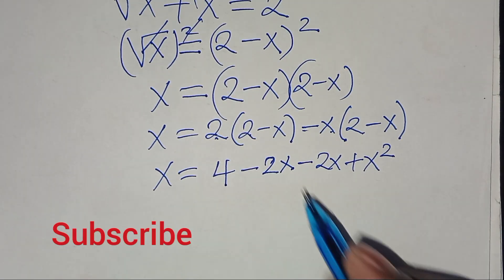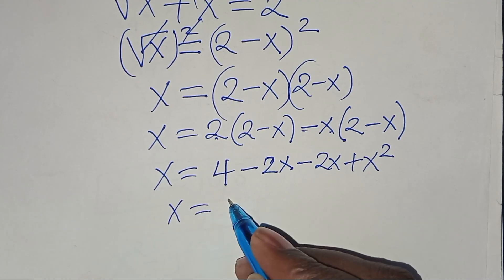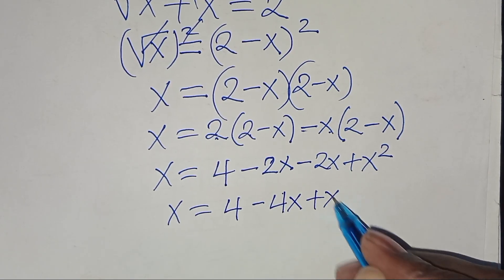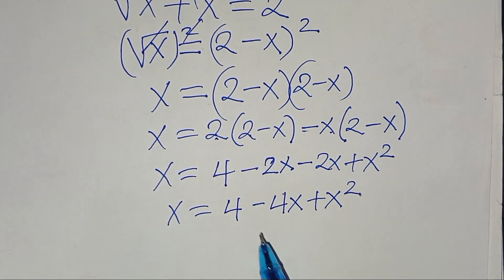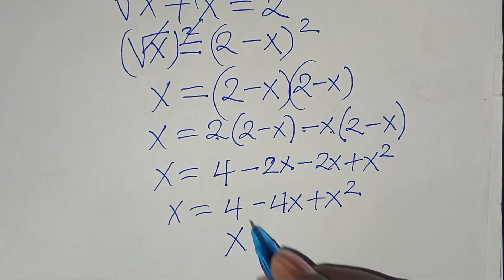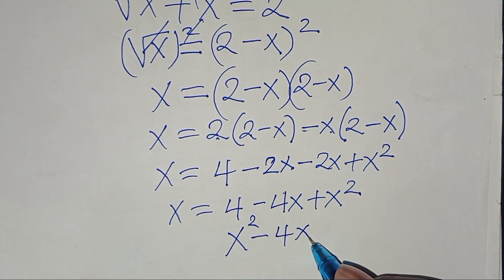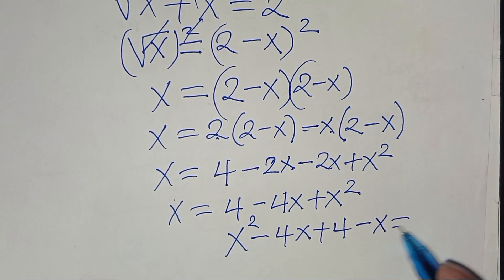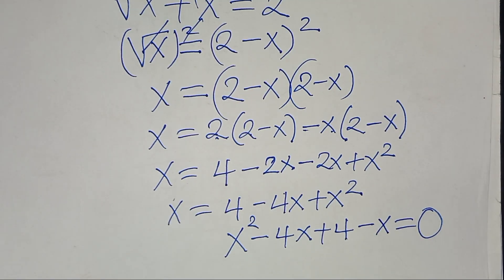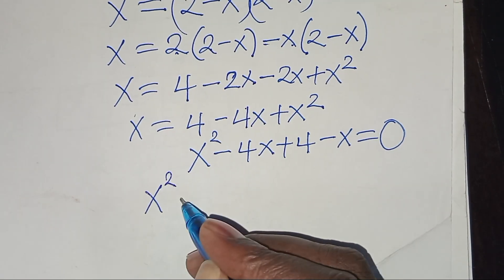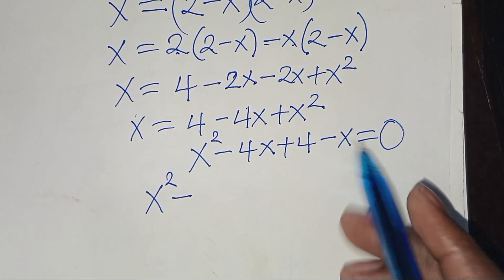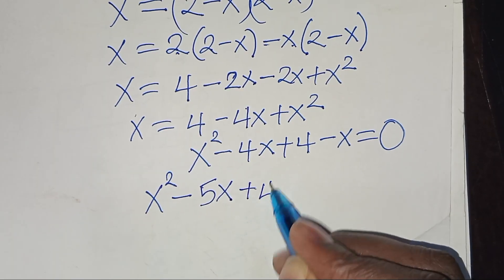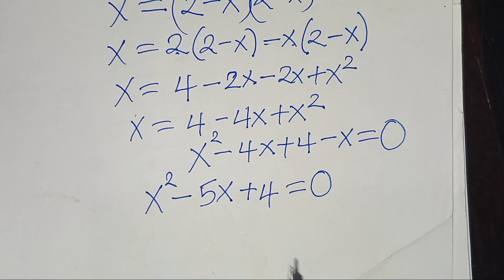Collecting the right-hand side terms: x equals 4 minus 4x plus x squared. Rearranging and taking x to the right hand side gives us x squared minus 4x minus x plus 4 equals 0, which simplifies to x squared minus 5x plus 4 equals 0.